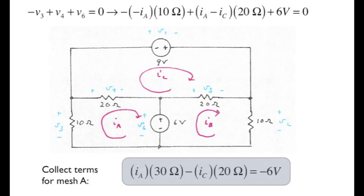Collecting terms in the KVL equation, an algebraic task, it may be written as shown on the bottom of the screen. So it turns out that KVL for this mesh A can be expressed simply as I sub A times 30 ohms minus I sub C times 20 ohms is equal to minus 6 volts.